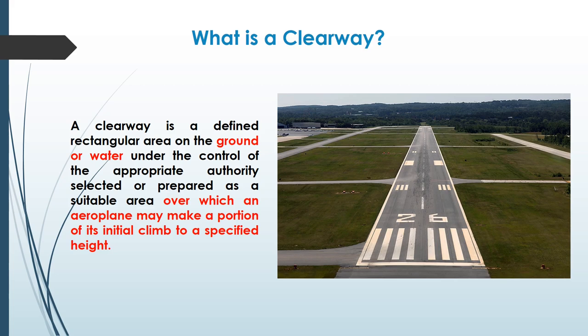Next is the clearway. A clearway is a defined rectangular area on ground or water — so a clearway can be located on ground as well as on water. This clearway should be under the control of the appropriate authority, and this area is selected and prepared as a suitable area over which the aircraft can make a portion of its initial climb up to a specific height during takeoff. This area can be over ground and on water also.